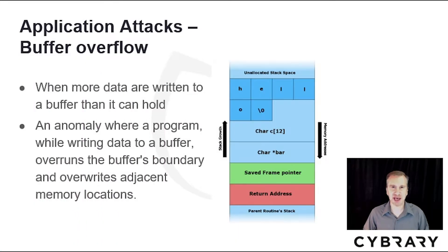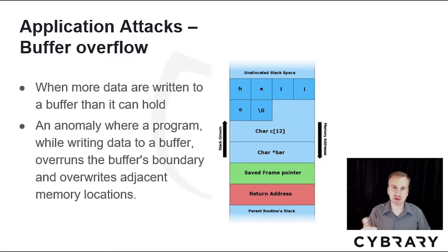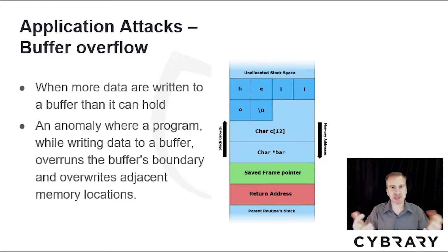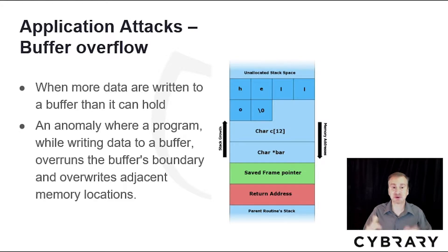The first type of application attack is buffer overflow. This is a type of injection attack where more data is input through a field than the buffer can hold. It's like trying to fill a bucket too full — any water that spills out is then executed. Any code that goes beyond the buffer could be executed by the operating system. It's an anomaly where a program, while writing data to a registry or buffer, overruns the buffer's boundaries and overwrites adjacent memory locations, causing the breach.